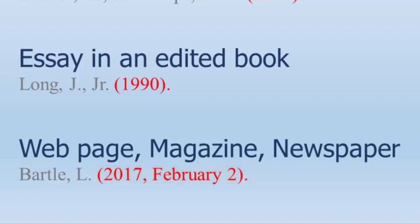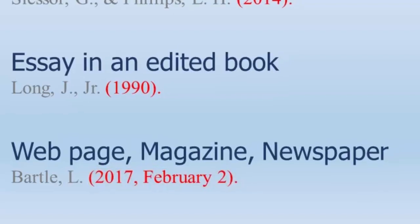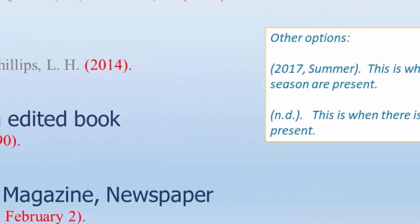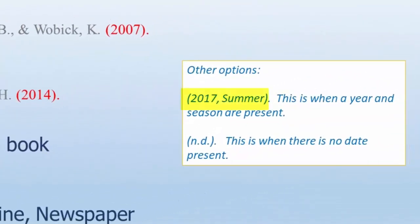Some scholarly journals will use a season to signify the period within a year for the issue. If that is the case, follow the year with a comma, then the season in title case. Items without a date will take n.d. in lowercase, with no space between them, and wrapped in parentheses.